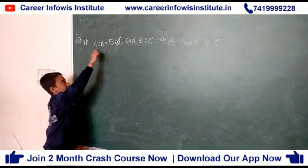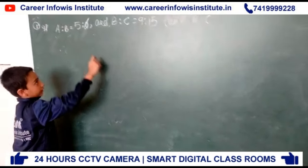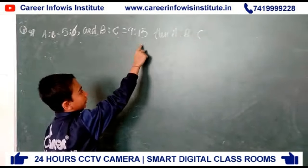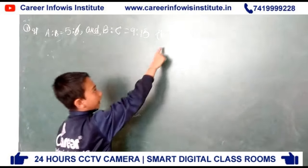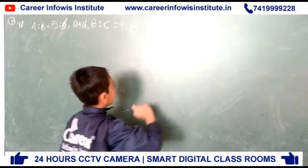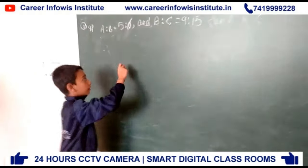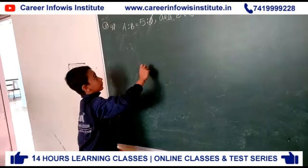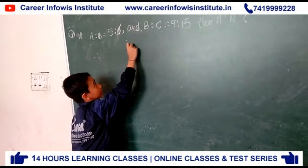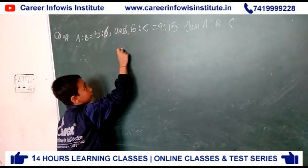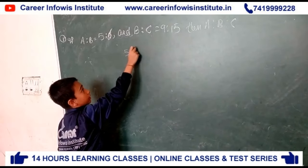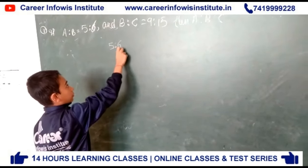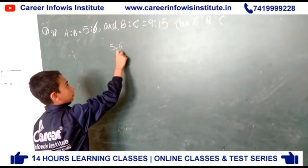If A ratio B is 35 ratio 6 and B ratio C is 29 ratio 15, then we find A ratio B ratio C. The value of A ratio B is 35 ratio 6 and the value of B ratio C is 29 ratio 15.